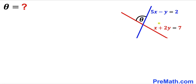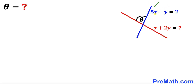Welcome to pre-math. In this video we have got two straight lines that intersect each other, and as a result we get this angle theta as you can see in this diagram. Moreover, this blue straight line is being represented by